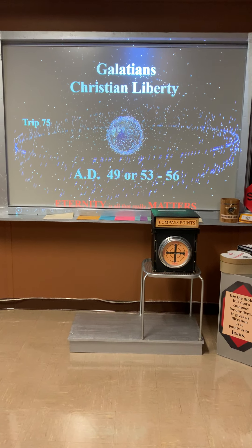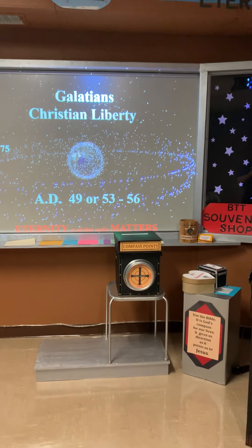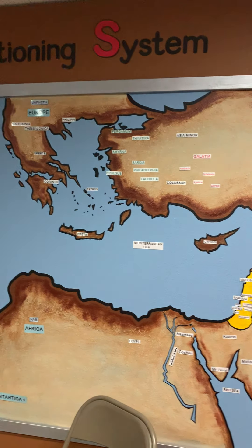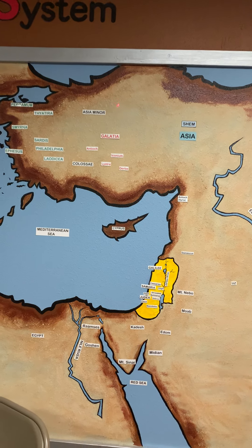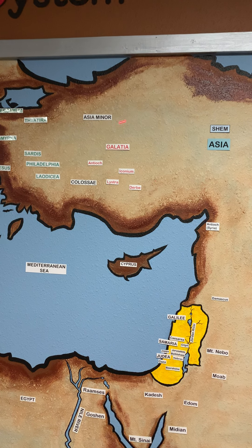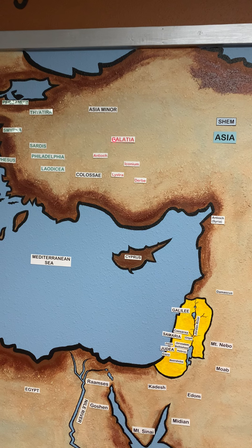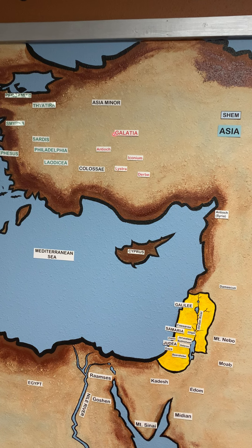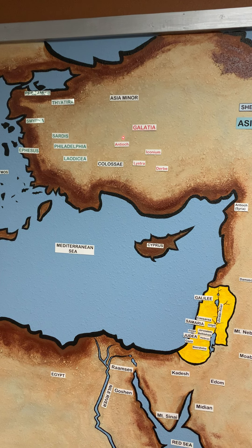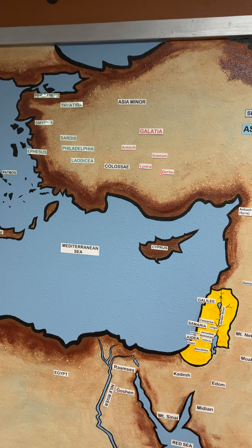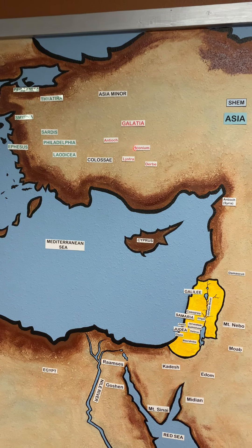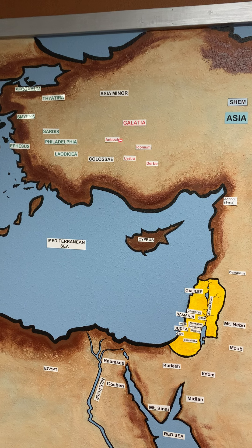Now let's go to our map window and see where we visited today. We visited the province of Galatia up here in Asia Minor. The individual congregations that were started there — the churches of Galatia — are Antioch, Iconium, Lystra, and Derbe. These are the Galatian churches that Paul was writing this letter to.